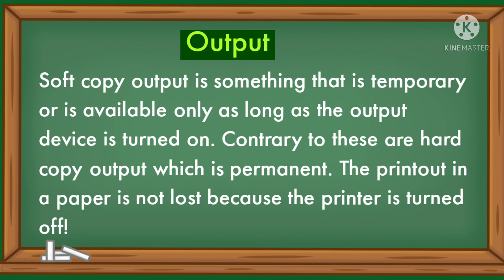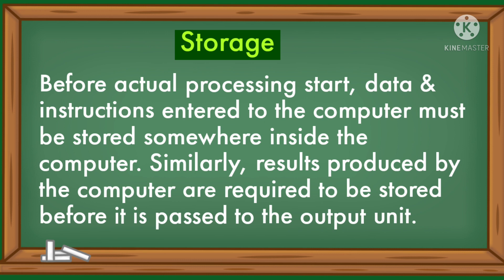Soft copy output is something that is temporary, or is available only as long as the output device is turned on. Contrary to this is hard copy output, which is permanent — a printout on paper is not lost because the printer is turned off. Before actual processing starts, data and instructions entered into the computer must be stored somewhere inside the computer.